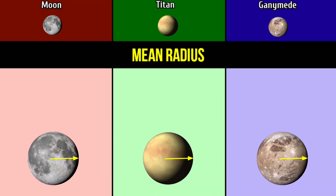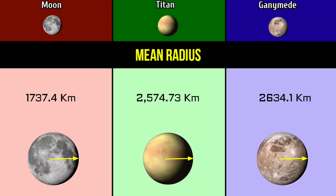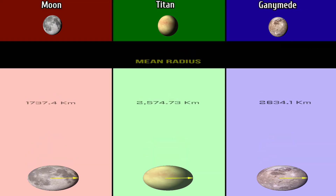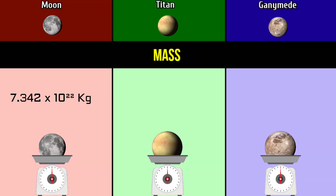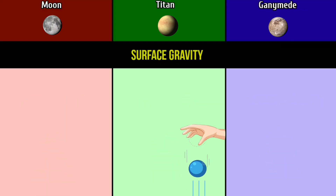Mean radius: 1,737.4 kilometers for the Moon; 2,574.73 kilometers for Titan; 2,634.1 kilometers for Ganymede. Mass: 7.342 × 10²² kilograms for the Moon; 1.373 × 10²³ kilograms for Titan; 1.4819 × 10²³ kilograms for Ganymede.